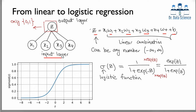What we're going to do is take this output and pass it to the logistic or sigmoid function. As you can see, the output of this function is always between zero and one — when z is very large we get close to one, when z is a very large negative number it goes to zero, and right in the middle is exactly 0.5.